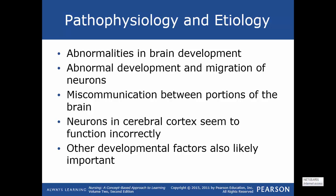Looking at the pathophysiology, there are abnormalities in brain development. The primary problem seems to be an abnormality in the development and migration of neurons in the brain. This results in a miscommunication between portions of the brain, also called faulty wiring. Neurons in the cerebral cortex seem to function incorrectly. Other developmental factors are also likely important, and this is due to symptoms not occurring until late in the teen years.